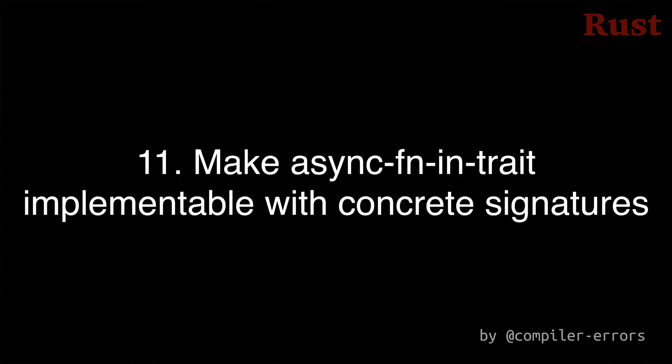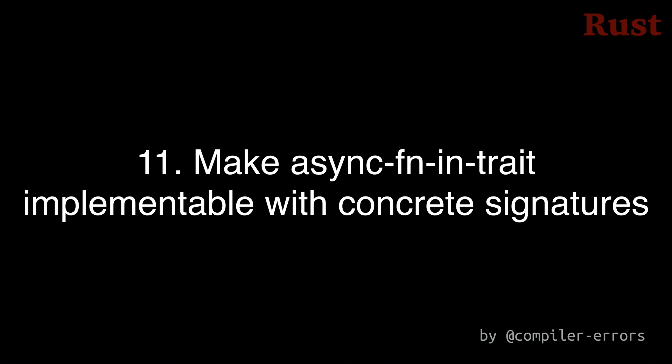Number 11: You can now manually write out the signature of an async method definition using a future. This allows manually refining the method definition.